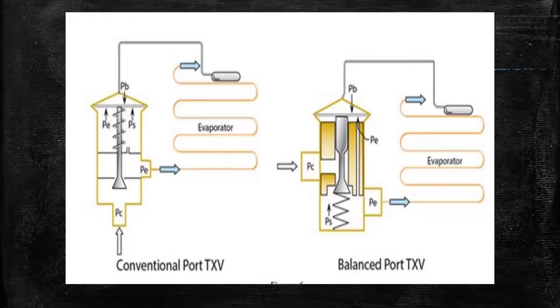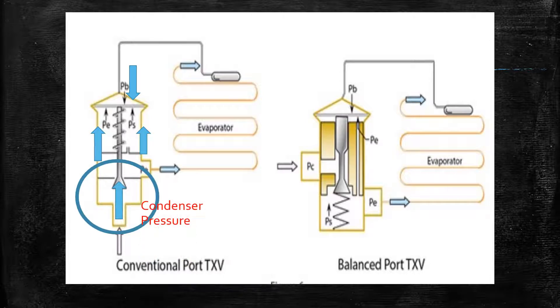In a conventional port TXV we have the evaporator pressure, the spring pressure, and the bulb pressure acting to open and close the valve. We also have condenser pressure which acts upon the metering device to try to open it as the liquid is coming into the valve.